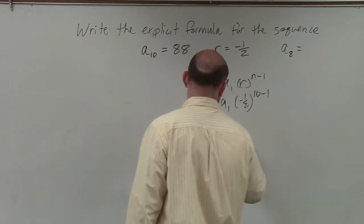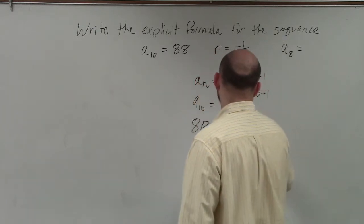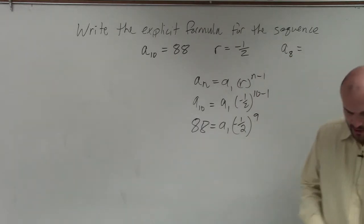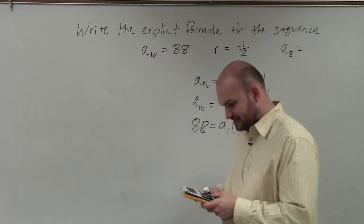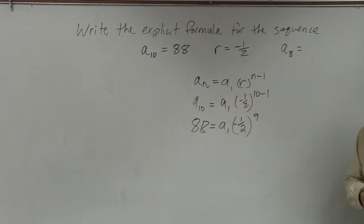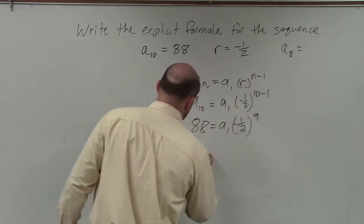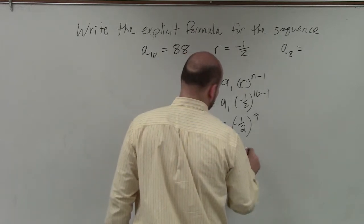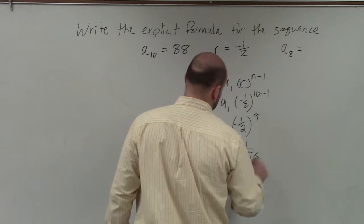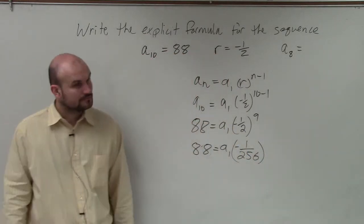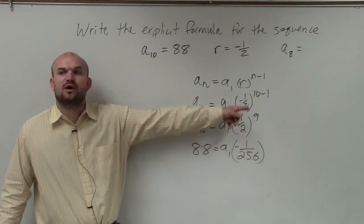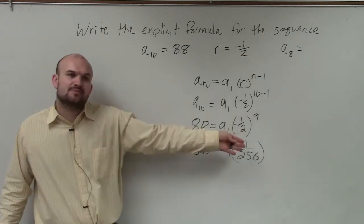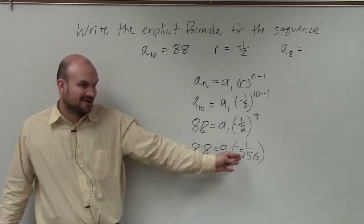88 equals a_sub_1 times negative one-half raised to the 9th power. So I basically am going to do 2 raised to the 9th power, which would be 512. So this becomes 88 equals a_sub_1 over negative 256. All I basically did is I raised 1 to the 9th power and I raised 2 to the 9th power — 2 to the 9th power is 256. Since I'm raising a negative number to an odd power, that's going to remain negative.